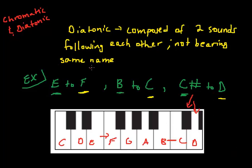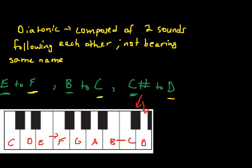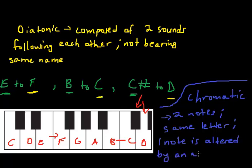And chromatic is... Let me get some more space here. Chromatic is... A chromatic semitone is composed of two notes with the same letter, with one being altered by an accidental. So, again, two notes, same letter for the name, but one note is altered. The pitch is altered by an accidental.